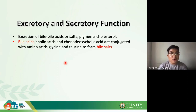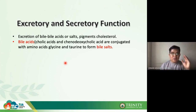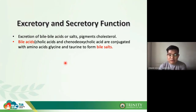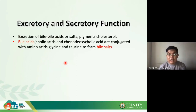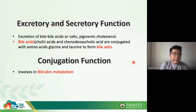With regard to the excretory and secretory function, bile acids are transferred to the gallbladder, where the portal triad takes place, and the bile acid is emptied into the intestine for the emulsification of fats and lipids during digestion. Much of this afternoon's discussion will focus on the conjugation function — specifically bilirubin metabolism, and bilirubin comes from heme.